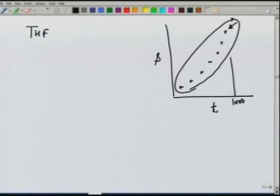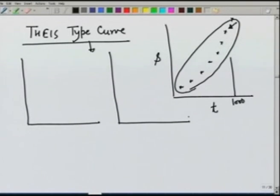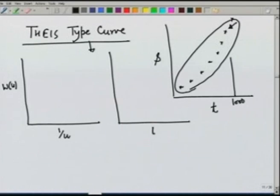That method is called the Theis type curve method. In this method, we use the entire curve. The type curve compares two different curves: one plots the well function W(u) versus 1/u, and the other plots t/r² versus drawdown s. The idea is that these two curves should be similar because — looking at the governing equations — there is only an axis shift between the curve of s versus t/r² on a log-log scale and W(u) versus 1/u on a log-log scale.